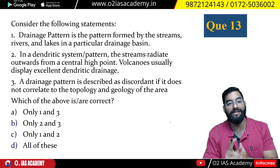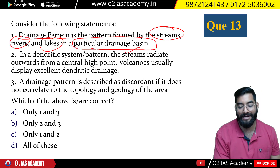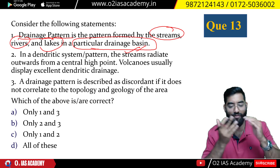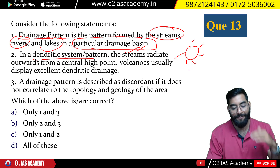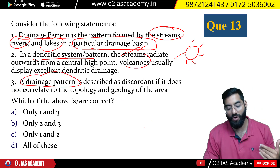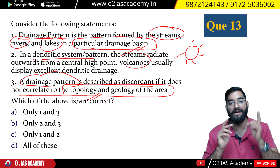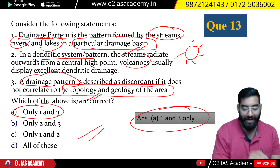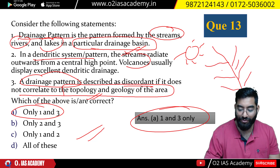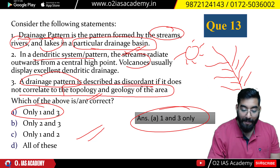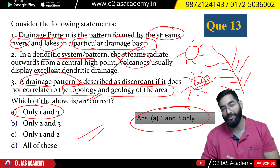Question number 13: Drainage pattern is a pattern formed by streams, rivers, and lakes in a particular drainage basin. Dendritic pattern looks like the branches of a tree — like dendrons. The streams that radiate outward from a central point form a radial pattern, typically seen around volcanoes. The answer is 1 and 3 — the option describing dendritic as radial is incorrect; that is actually the radial pattern.